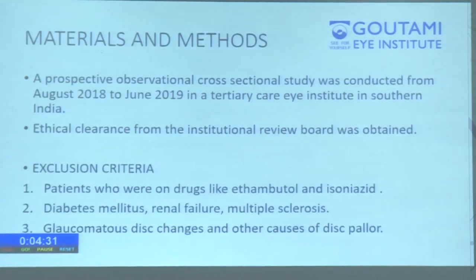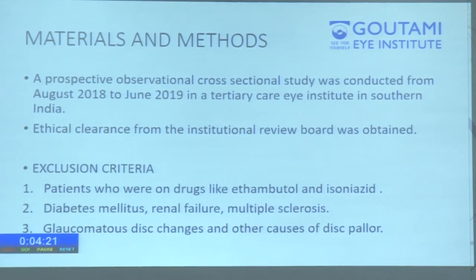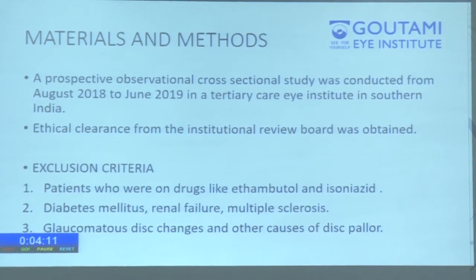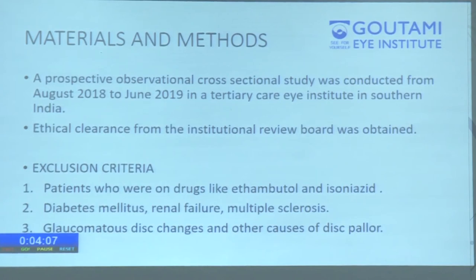This is a prospective observational cross-sectional study conducted from August 2018 to June 2019 in a tertiary eye care center in southern India. Ethical clearance was obtained from the institutional review board. All chronic alcohol and tobacco users were included, while those on drugs like ethambutol and isoniazid were excluded, as were those with diabetes, renal failure, multiple sclerosis, glaucomatous disc changes, and other causes of disc pallor.